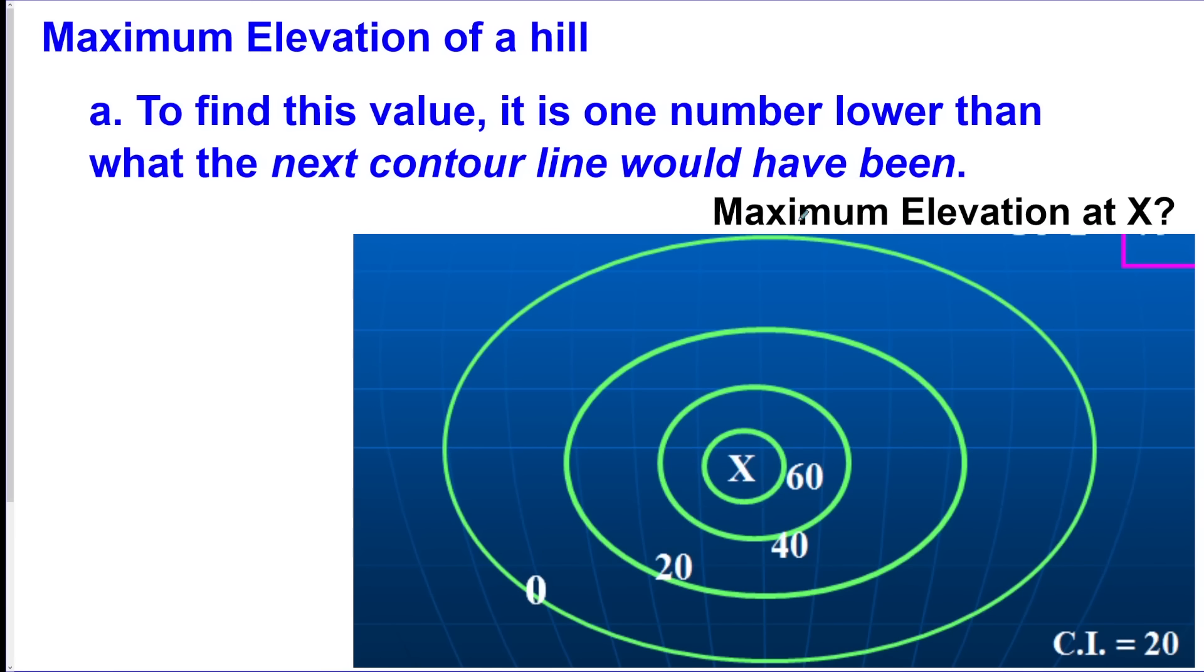The maximum elevation of a hill: so to find this, it's one number lower than what the next line would be. So if they want to know the x, what's the highest? These count by 20, so it'll go 20, 40, 60. The next line would be 80, but it's not there. So the highest this could be is one less than that, so this would be 79.